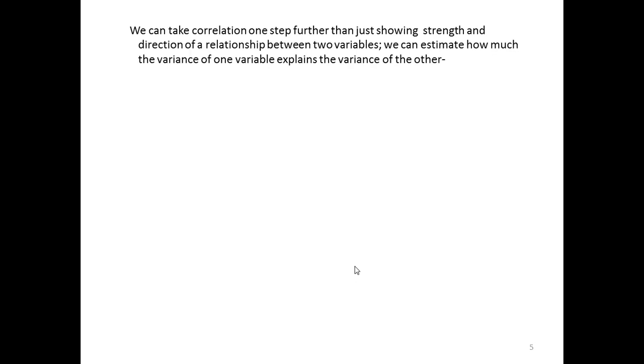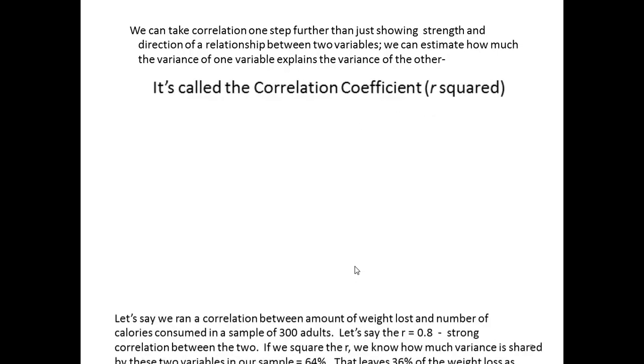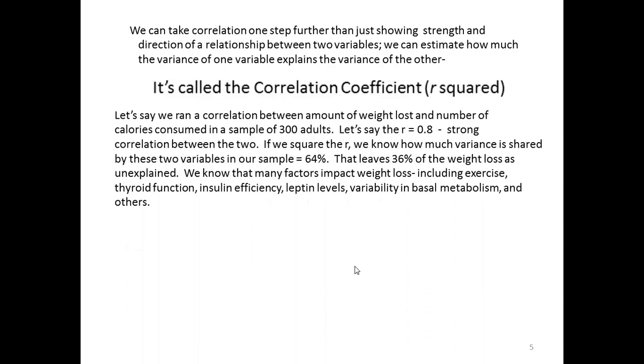We can take a correlation one step further than just showing strength and direction. We can estimate how much of the variance of one variable explains the variance of the other. In other words, how much of the outcome is actually explained by the relationship between the two variables. It's called the correlation coefficient, and we get it by squaring Pearson's r.